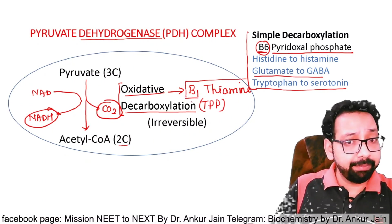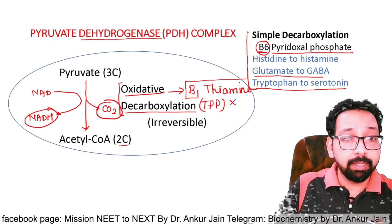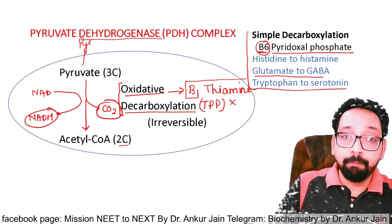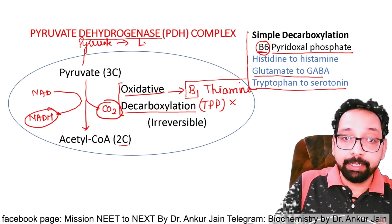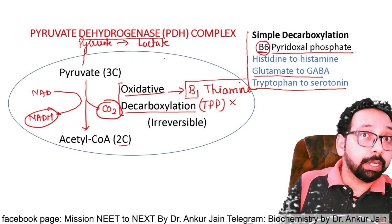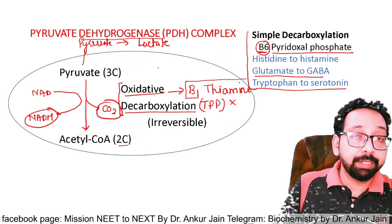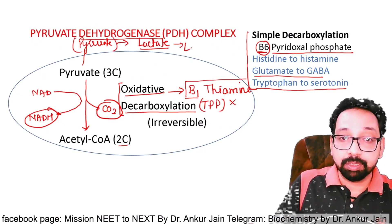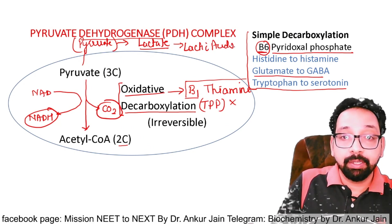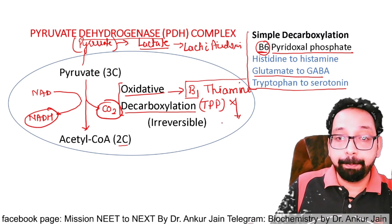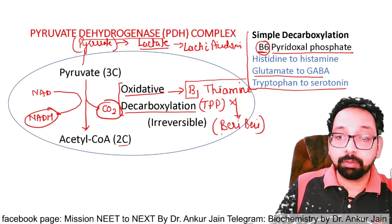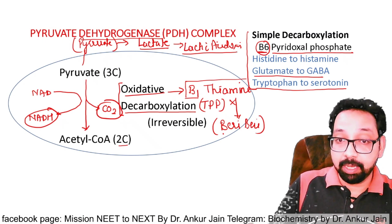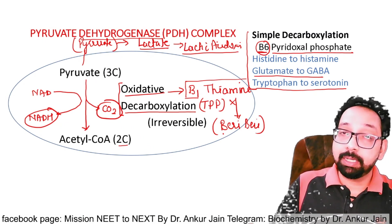In B1 deficiency, since B1 is required for oxidative decarboxylation, pyruvate will not be converted to acetyl coenzyme A. Pyruvate will not be metabolized and will instead be diverted toward lactate. This causes lactic acidosis. Vitamin B1 deficiency also causes beriberi — a frequently asked question. Lactic acidosis occurs in beriberi because pyruvate is diverted toward lactate synthesis.